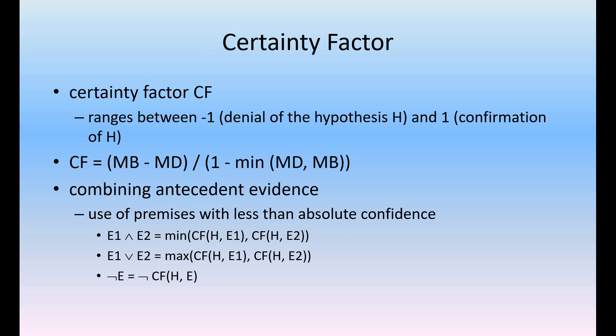The certainty factor ranges between minus 1 and 1. Minus 1 means denial of hypothesis H, and 1 means confirmation of H. Certainty factor CF equals measure of belief minus measure of disbelief, divided by 1 minus the minimum of (measure of disbelief, measure of belief). For combining antecedent evidence, using premises with less than absolute confidence: CF(H, E1 AND E2) equals the minimum of CF(H, E1) and CF(H, E2).